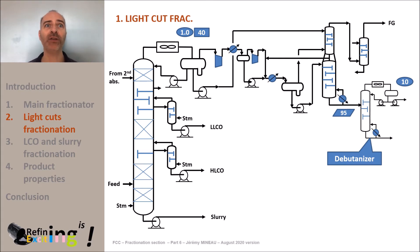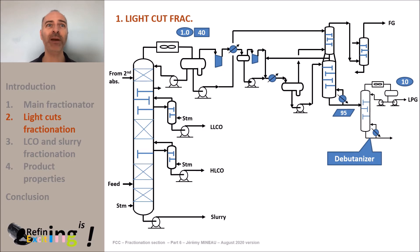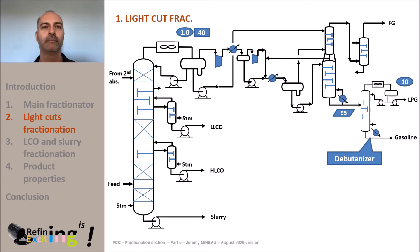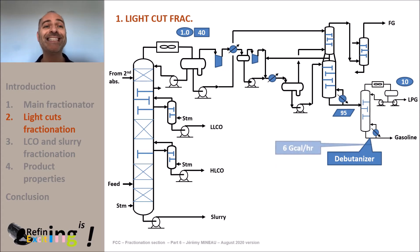The overhead liquid will consist of 98 weight percent LPG, and the bottom stream will be 100% gasoline with an extremely low amount of residual LPG. An order of magnitude of energy required to achieve this separation is about 6 giga calories per hour.